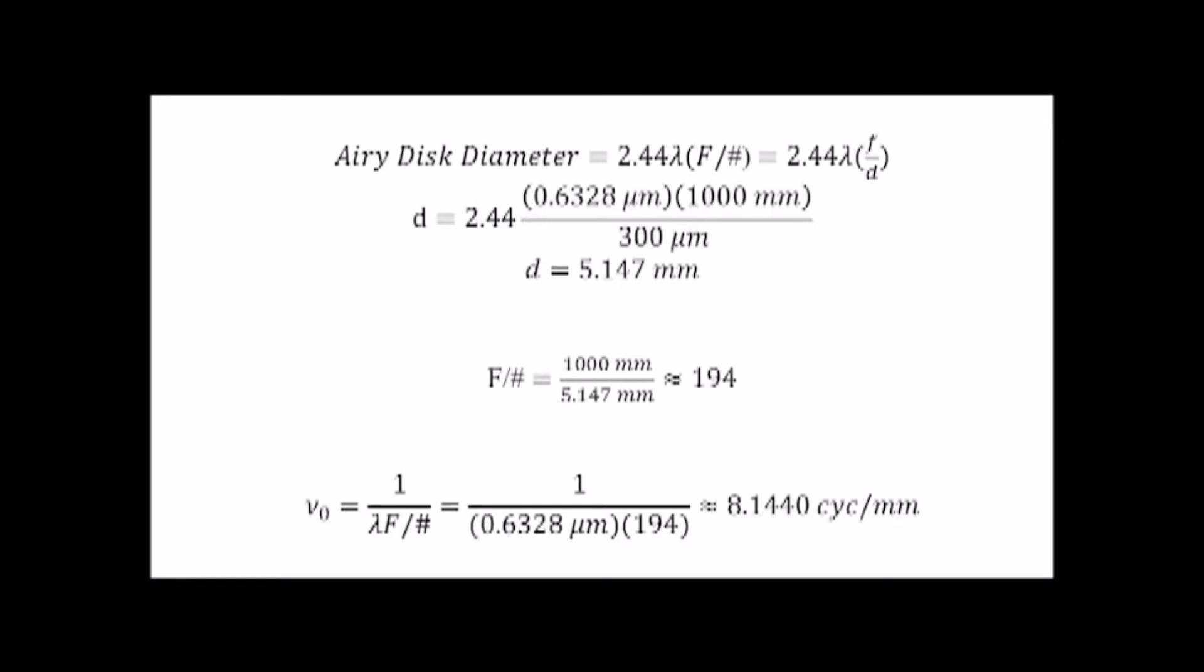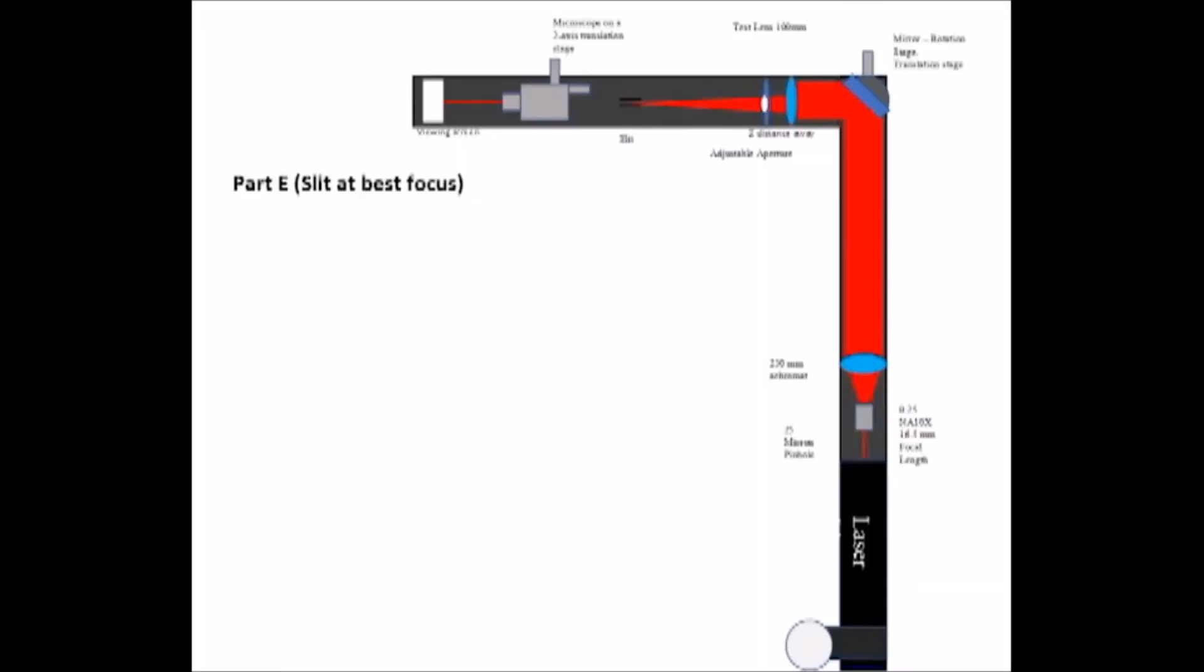The cutoff frequency defines our slit width for finding the line spread function. From measuring the line spread function, we again found the best focus, but since the slit had to be located at best focus and we had other alignment and mounting problems earlier constraining our time, we used our eyes and the microscope to locate what we thought was best focus. From the cutoff frequency, we found that our slit width should be about 0.128mm.